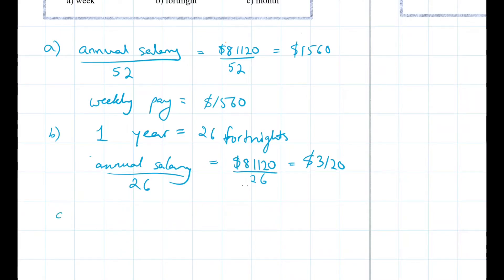So that is 3120. Right so let's do part C, which is per month. So there are 12 months in a year. So to get what you're going to receive in a month, we've got to do Annual Salary divided by 12.